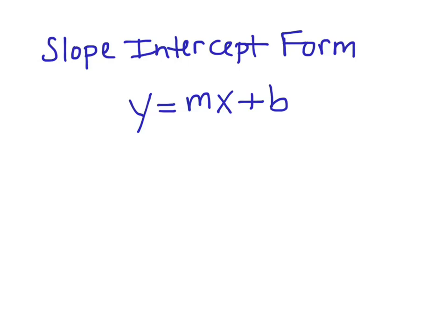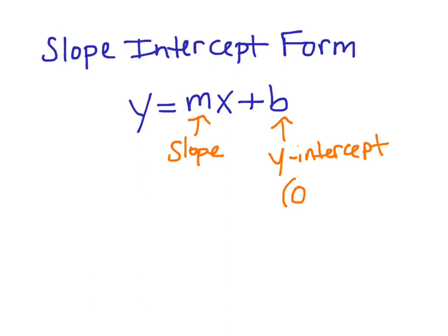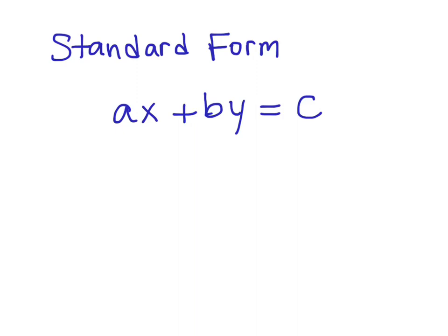There are two forms we'll look at for linear models, which are just the two forms of a linear equation. You've already seen Y = MX + B, the slope-intercept form. In this equation, the slope or rate of change is the number being multiplied by X, and you also have a Y-intercept — where the line crosses the Y-axis, where the X value is zero. In standard form, AX + BY = C, we have numbers multiplied by the two variables, and both are added together to equal a fixed constant on the right-hand side.